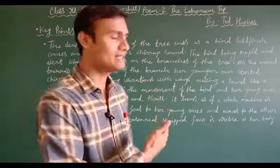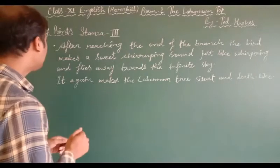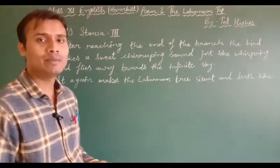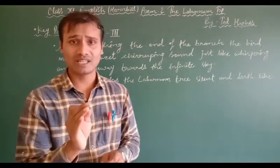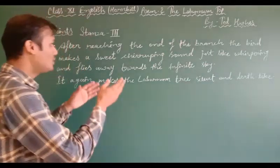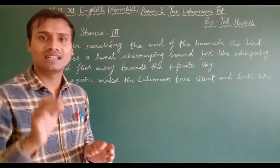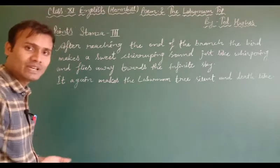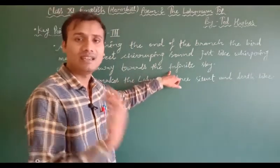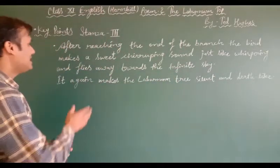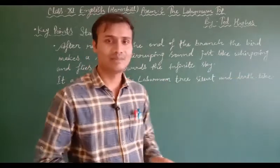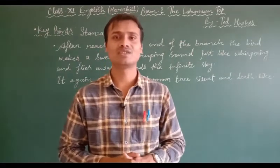In the third stanza, after reaching the end of the branch, the goldfinch makes a sweet chirping sound just like whispering — speaking in a low, quiet voice without stress to the vocal cord — as if giving a secret message to her young ones. After whispering, the goldfinch flies away towards the infinite, boundless sky. As soon as the bird leaves, the laburnum tree again becomes silent and death-like. That is how the poet beautifully concludes this poem.